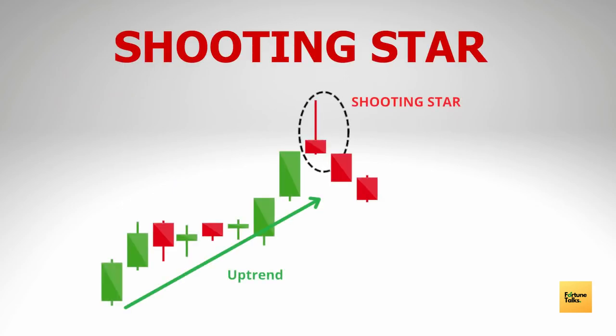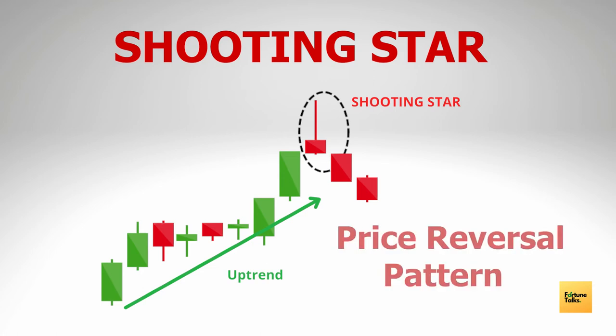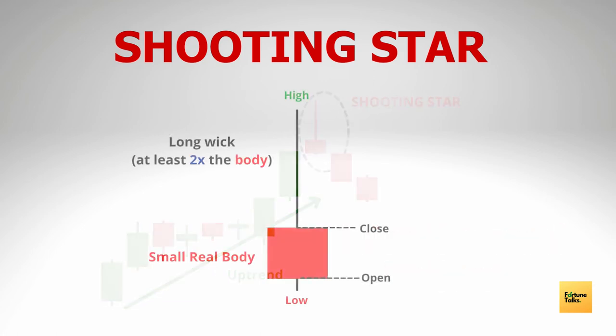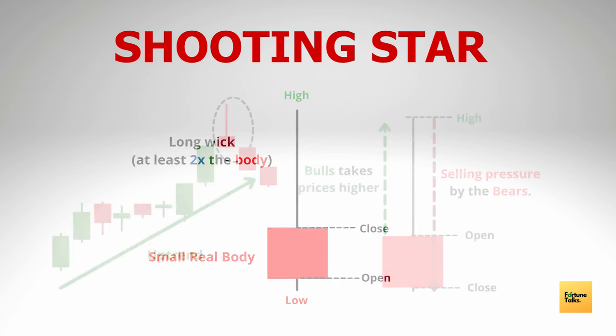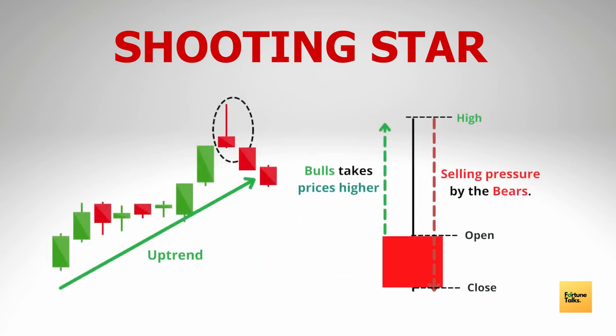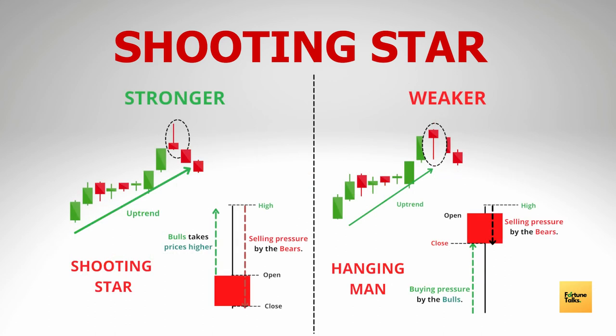A pin bar is called a shooting star when it occurs at the end of an uptrend, indicating a price reversal. Similar to an inverted hammer, it has a small real body with open and close prices close to one another, and a large upper wick indicating that the bulls tried to bring the price up but were overpowered by the bears who pushed the price below the open. The shooting star is a strong bearish pattern — stronger than the hanging man — because the sellers were more in control when the shooting star was formed.